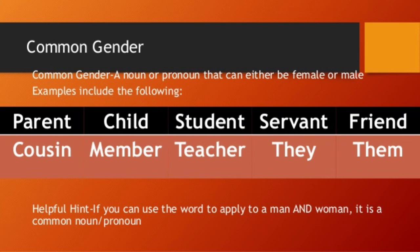Servant, friend, cousin, member, teacher — pronouns 'they' and 'them' are also common gender. When talking about a group containing both men and women, we call them 'they.' Cousin could be a brother or sister. A driver could be a girl or a boy. A lawyer could be male or female — any occupation that can be done by either gender is common gender.